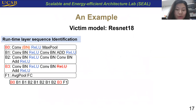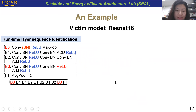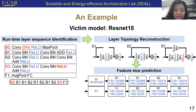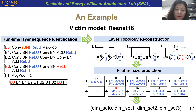Here is an example for model extraction where the victim model is ResNet-18. During the first step — runtime layer sequence identification — DeepSniper accurately predicts the layer sequence with small errors shown in red. In the next step, we reconstruct the layer topology according to the memory access behavior. Then we predict the feature map sizes according to the read volume of the ReLU operations. In the dimension estimation, we randomly select four dimension sets from the potential dimension space that satisfy the layer size constraints, which are different from the weights in ResNet-18. We will show that even with these extracted architectures, we can obtain quite good attack success rates.